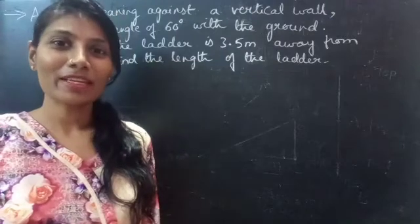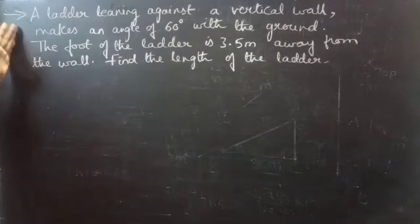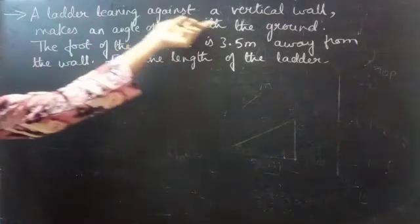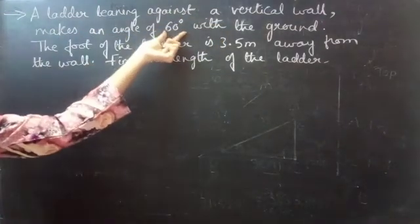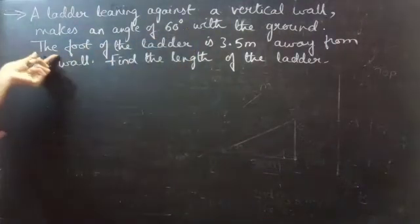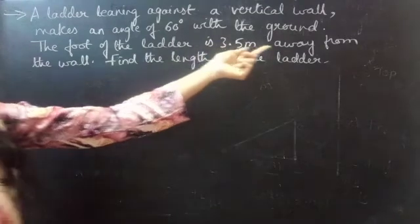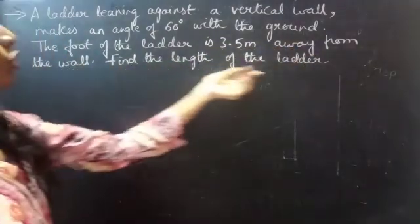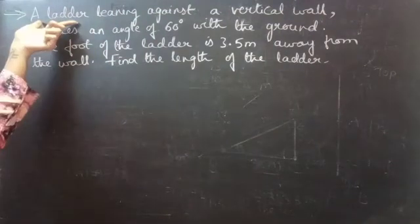Hello everyone, this is Agna here. In this video we'll see a problem on heights and distance. A ladder leaning against a vertical wall makes an angle of 60 degrees with the ground. The foot of the ladder is 3.5 meters away from the wall. Find the length of the ladder.